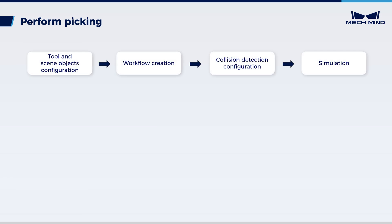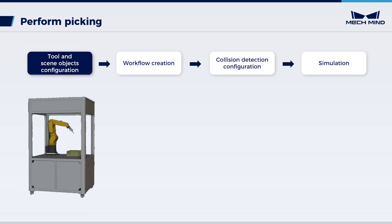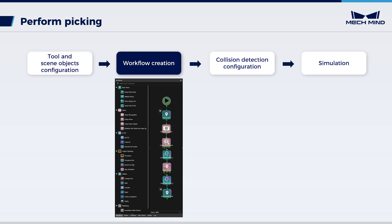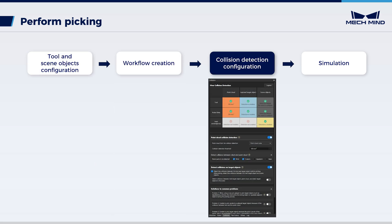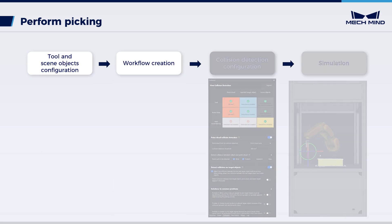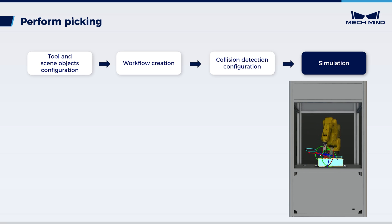Building a MechViz project requires the following steps: tool and scene objects configuration, workflow creation, collision detection configuration, and simulation.